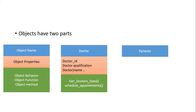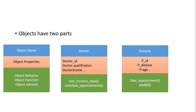Let's take another example: an object named Patient. It would have data or properties like patient disease, age, ID, address, and symptoms of the disease. In the behavior part, the patient could be taking appointments, going to get some tests, and so on. Everything under the umbrella of behavior would be part of this class or object Patient.